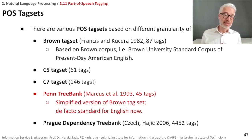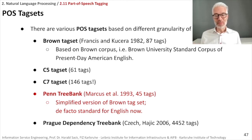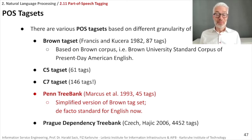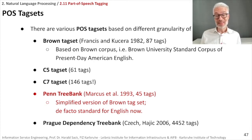There are other tag sets — C5, C7 — which differ in the number of tags. Today, the most popular tag set used is the Penn Treebank tag set. A Treebank is a parsed text corpus that annotates syntactic or semantic sentence structure; this was developed in the mid-1990s and revolutionized computational linguistics. In 1993, a simplified version of the Brown tag set was published with 45 tags. There are also much larger tag sets — for example, the JTDDB dependency treebank dataset has 4,452 tags, so be glad you don't have to remember all of them.